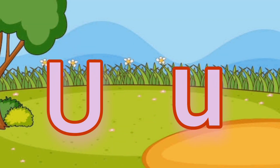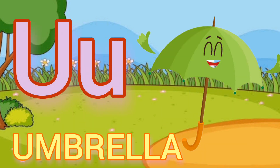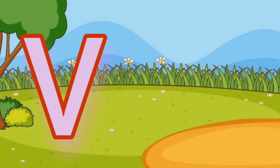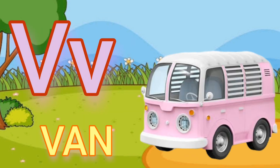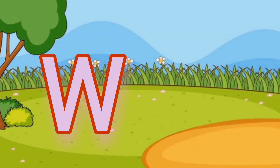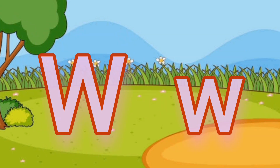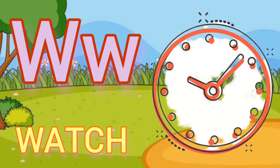Capital U, small u. U for umbrella. Capital V, small v. V for van. Capital W, small w. W for watch.